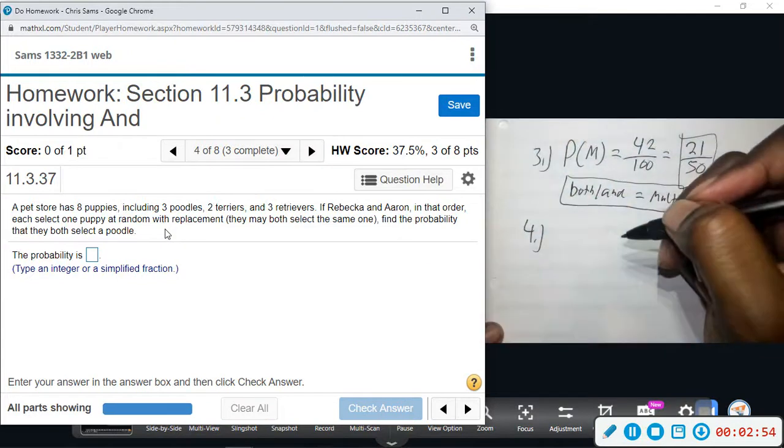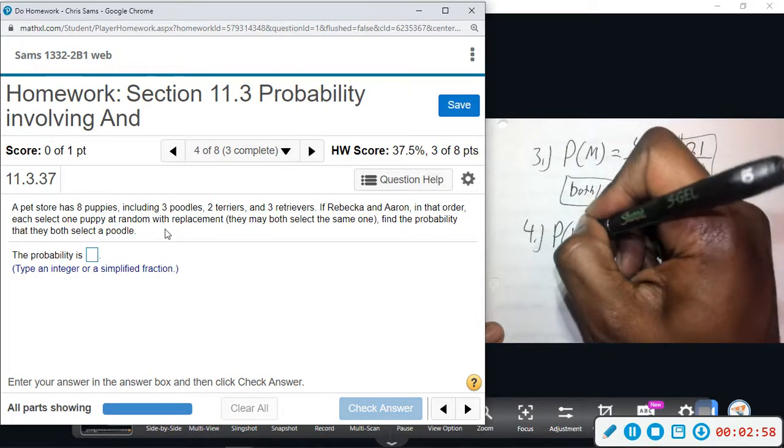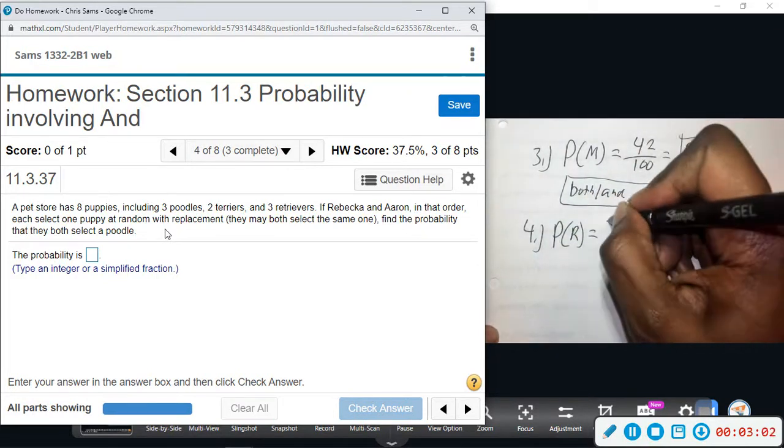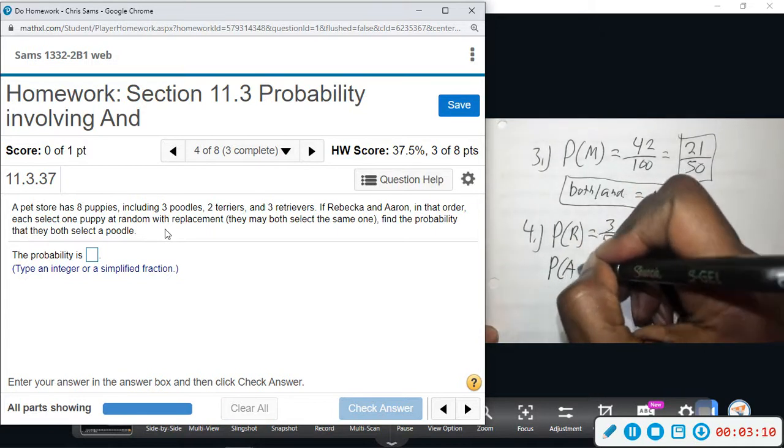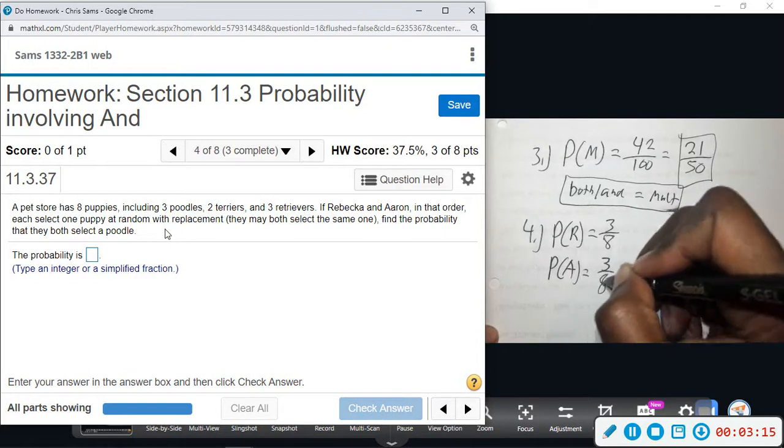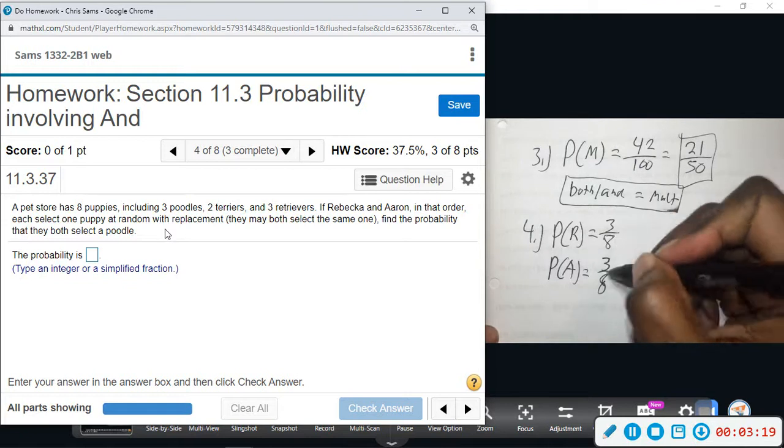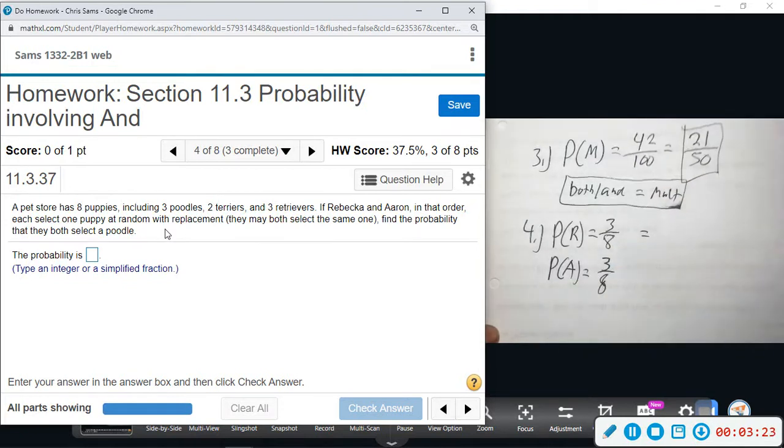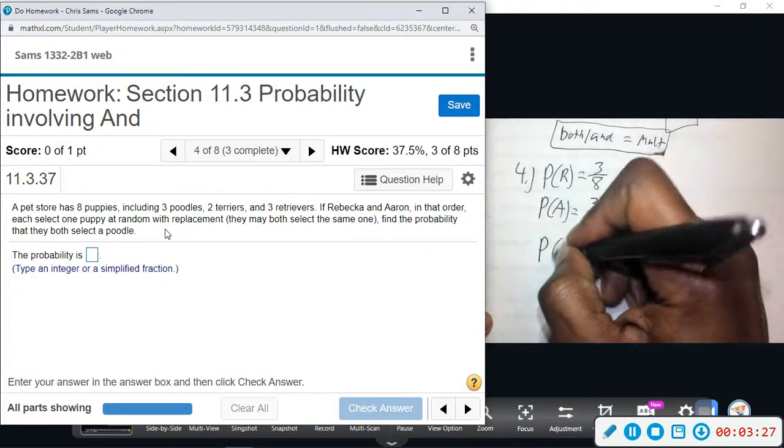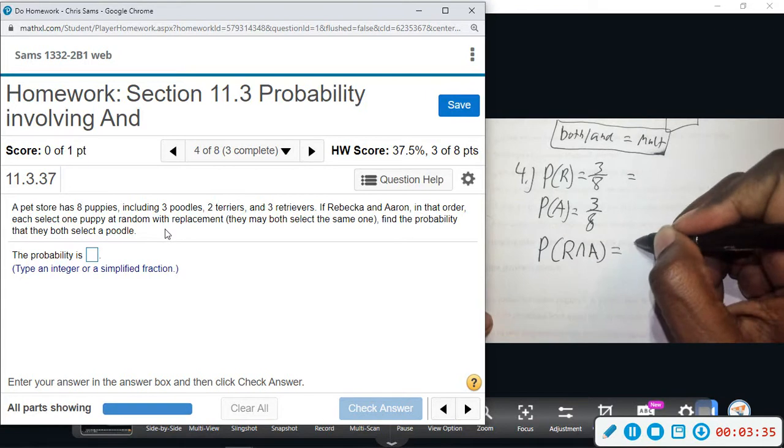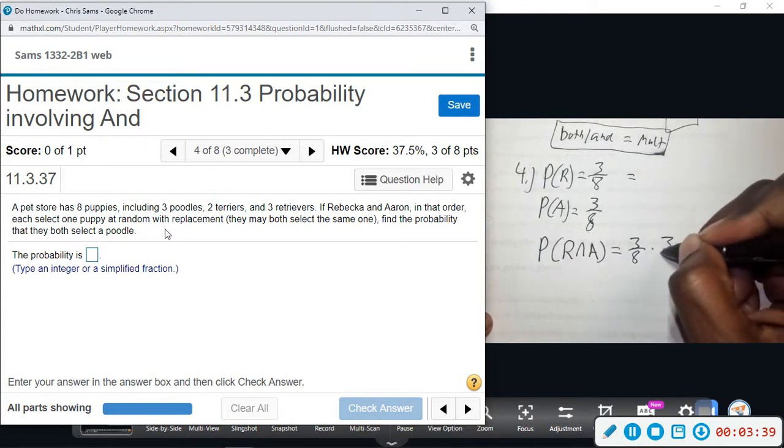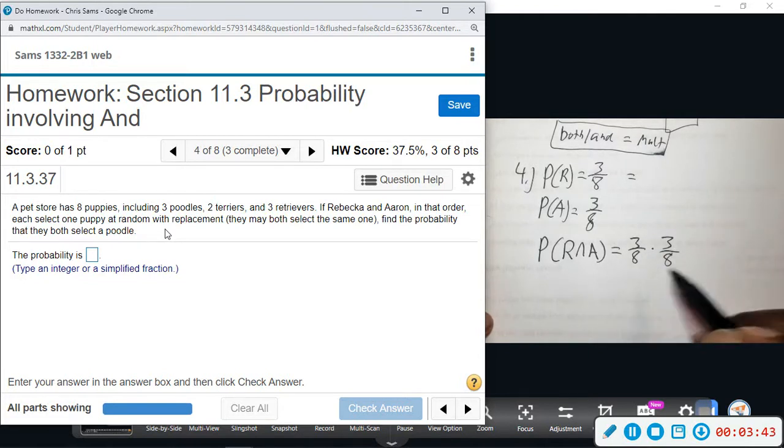Alright, so they both select the poodle. The probability that Rebecca selects a poodle - there's three poodles out of eight. Now when she selects it and puts it back, the probability that Aaron now selects a poodle is still three out of eight. So since we're looking for both, we have to multiply these two together. So the better way to write this: probability that Rebecca and Aaron select the poodle would be 3/8 times 3/8. Find each of their probabilities individually, then we'll multiply them together. That will give us 9 out of 64. So the probability that they both select a poodle will be 9 out of 64.